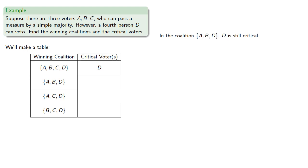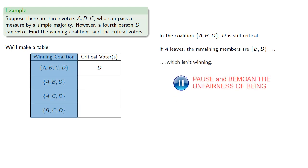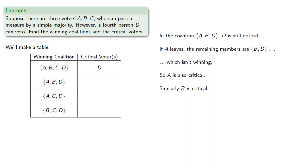In the coalition A, B, and D, D is still critical. If A leaves, the remaining members are B and D, which is not one of our winning coalitions. So A is critical, and the same argument can be made for B. So in the coalition A, B, and D, the critical voters are A, B, and D.